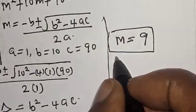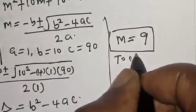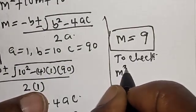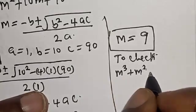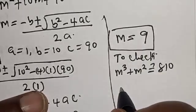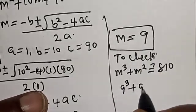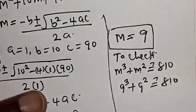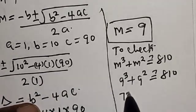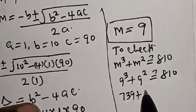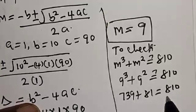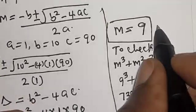We can check to confirm if our answer is right. To check: we have the given equation, m cubed plus m squared must equal 810. At m equal to 9, we have 9 cubed plus 9 squared must equal 810. 9 cubed is 729, plus 81, equals 810. We satisfy the given equation at m equal to 9.